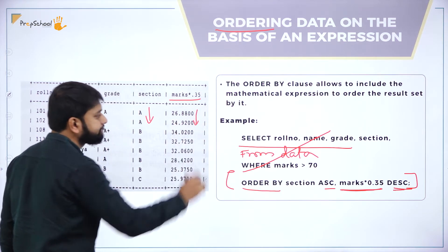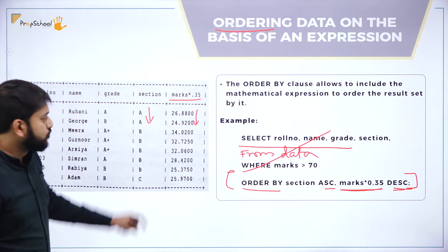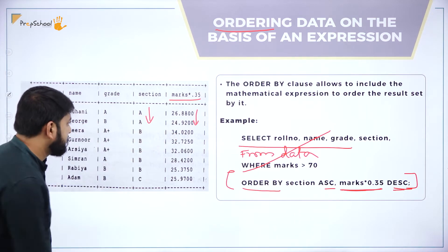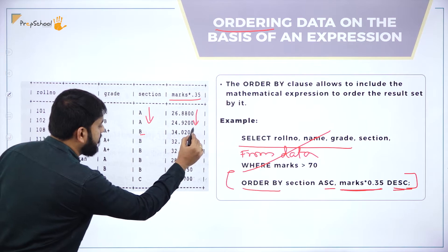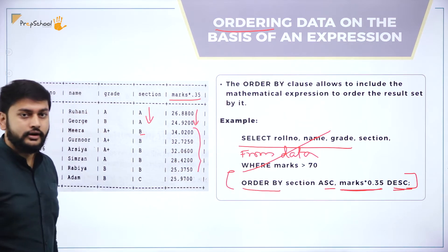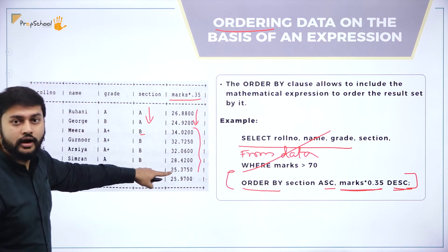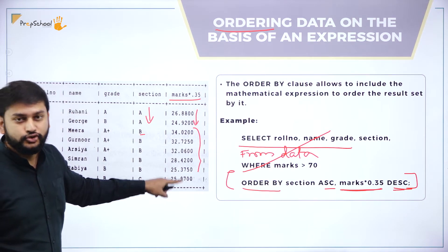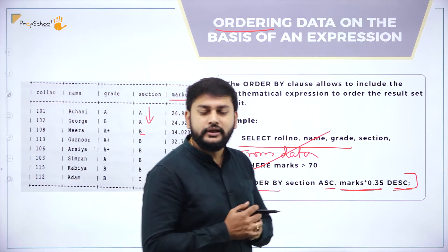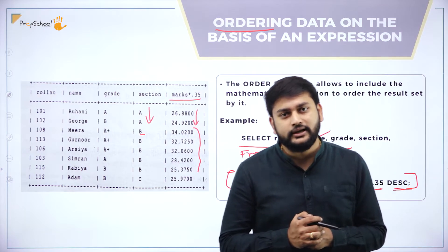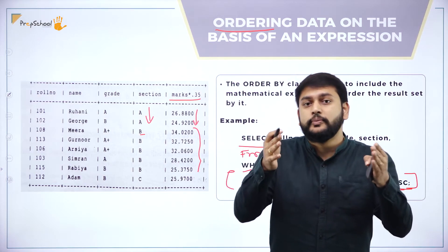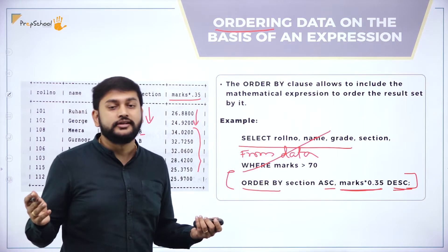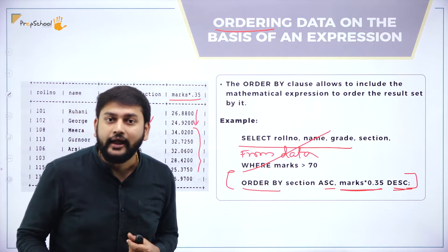Observing the output: for section A I have values like 26, 24 in descending order; then for section B the values are sorted descending; then section C follows. This is how I use the ORDER BY clause and perform ORDER BY with an expression.